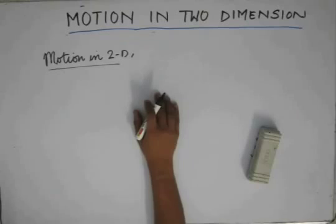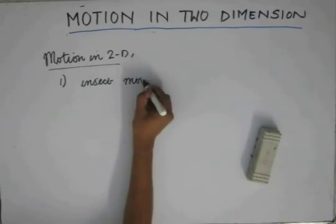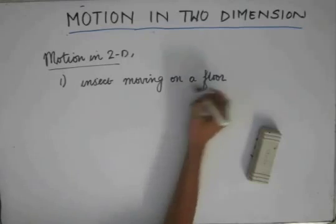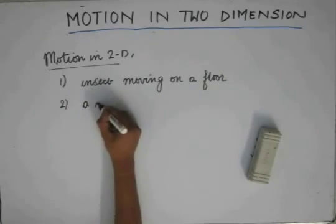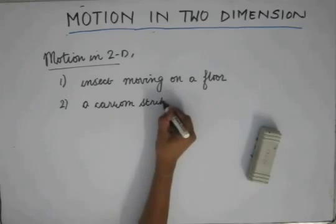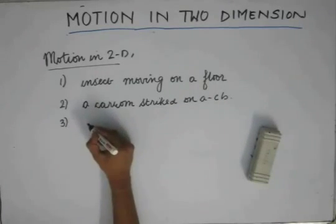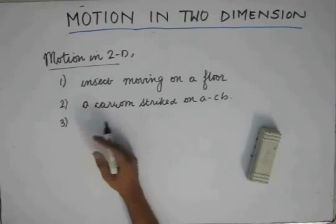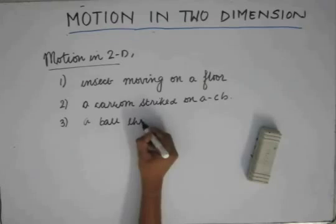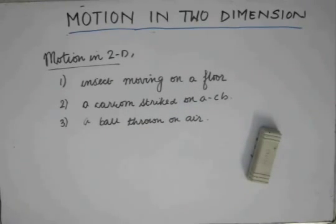Examples of motion in two dimensions could be an insect moving on a floor, a carom strike on a carom board, or a ball thrown in the air such that it follows a curved path and is not deviated sideways. These are three examples of motion in two dimensions.